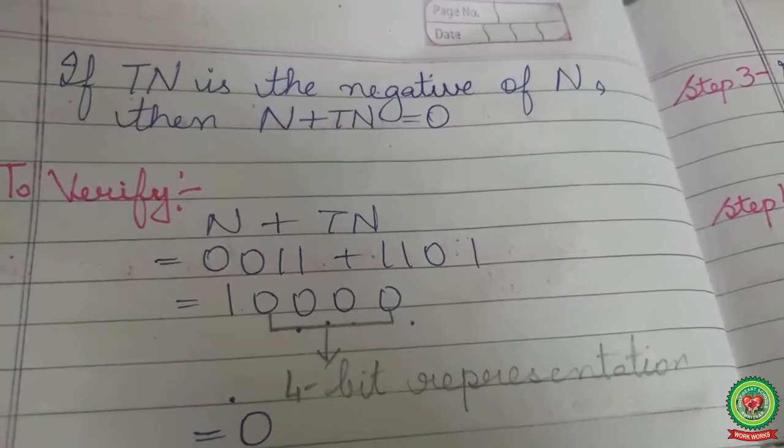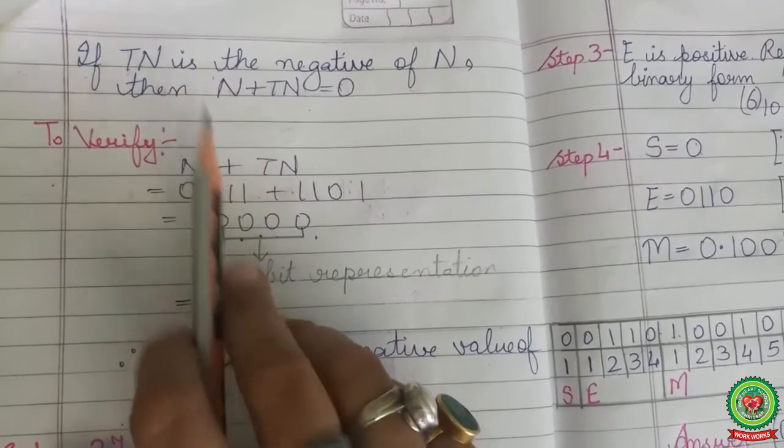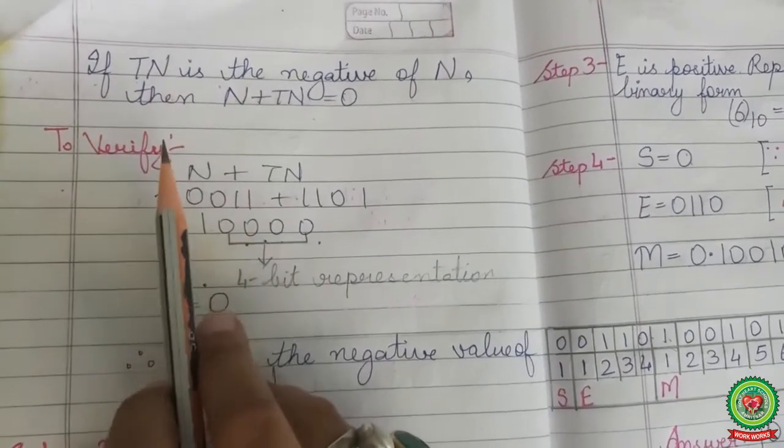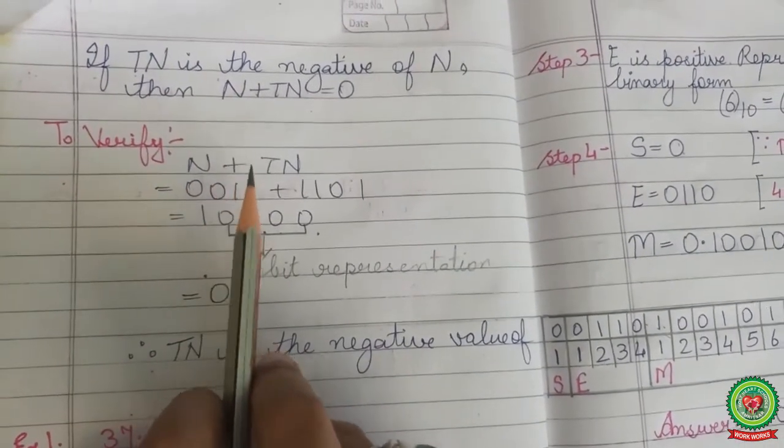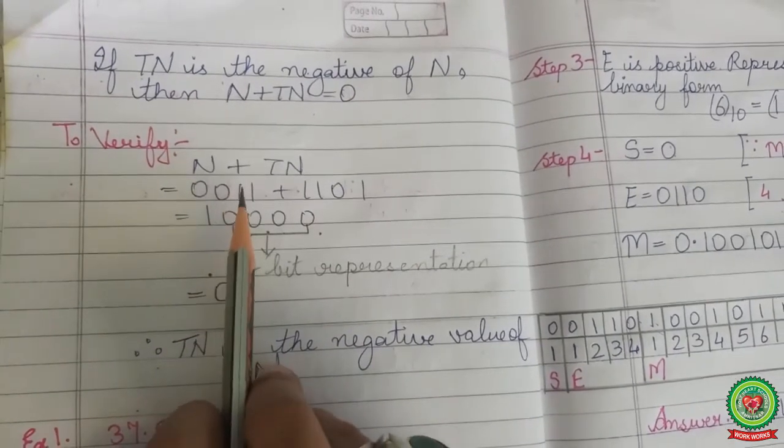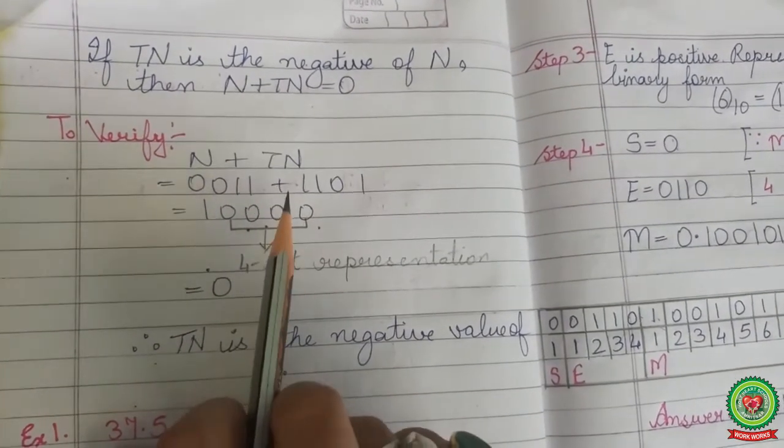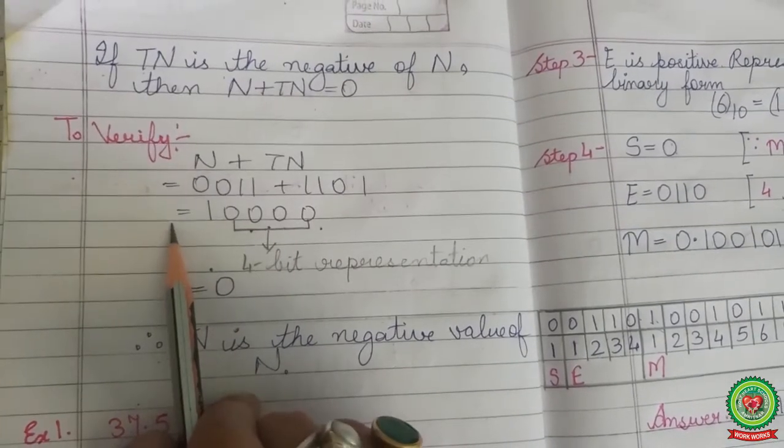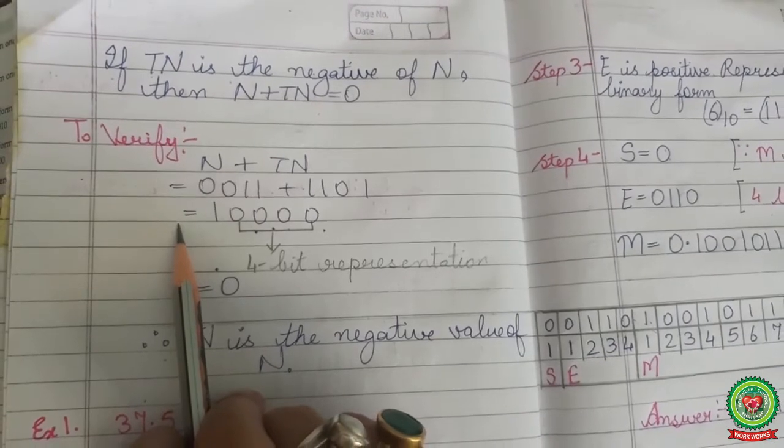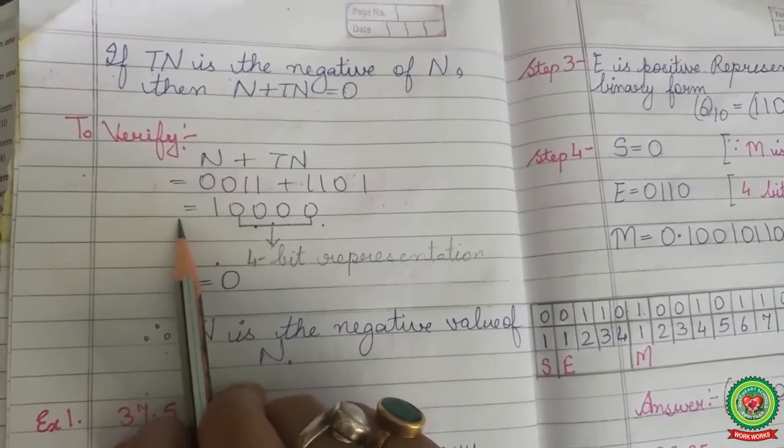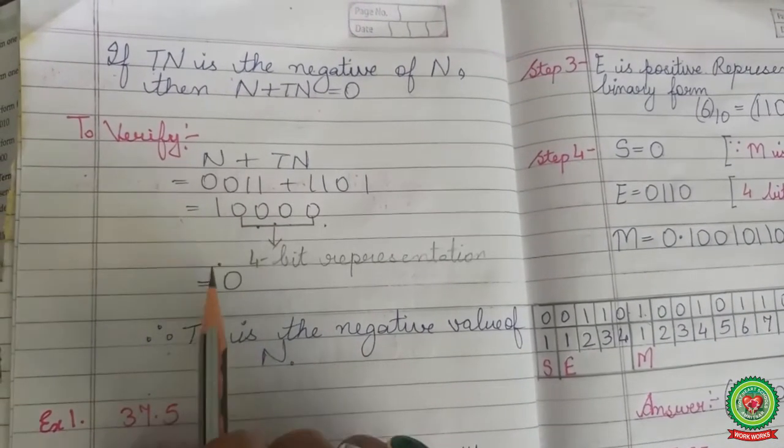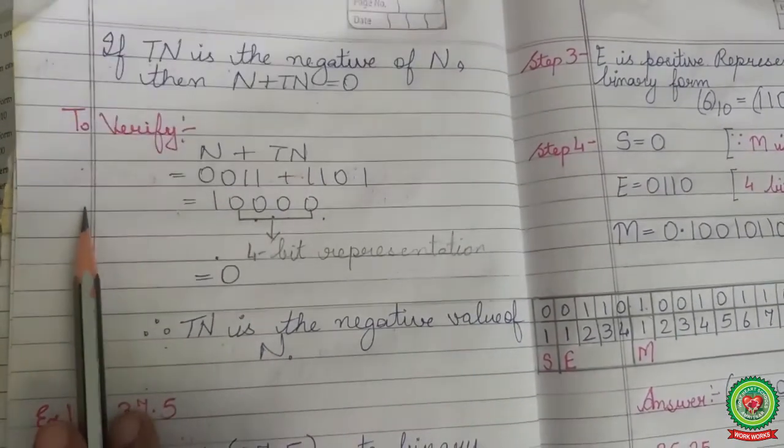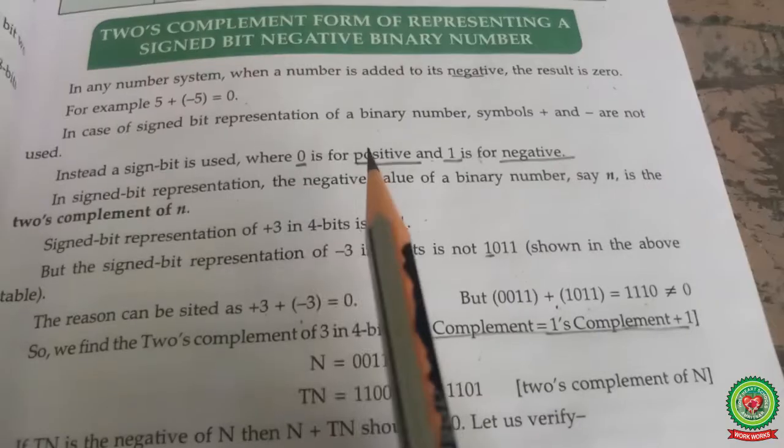If two's complement is the negative of N, then N plus TN should be equals to 0. To verify, N plus TN which equals 0011 plus 1101, that equals 10000. We have 4 bit representation, so answer is 0. Hence, we can observe that TN is the negative value of N.